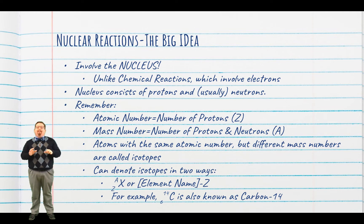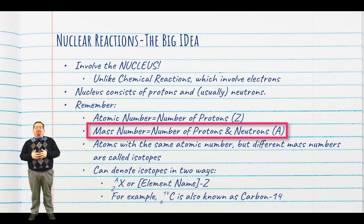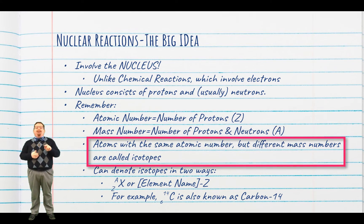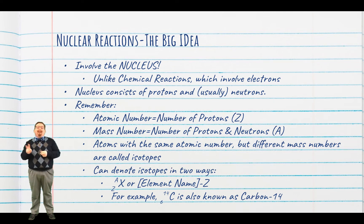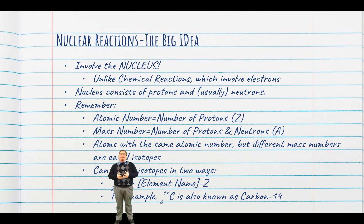Before we get started, let's refresh your memory. The atomic number is equal to the number of protons, we'll call it Z here. The mass number is equal to the number of protons and neutrons, we'll call it A. And when you have two atoms with the same number of protons but different numbers of neutrons, we call them isotopes of each other. We can denote an isotope in two ways. We can write the element's symbol with the atomic number as a subscript and the mass number as a superscript, both on the left side of the symbol. Or, we can write out the element's name followed by the mass number of that isotope. For example, we could write carbon-14 like this or like this.